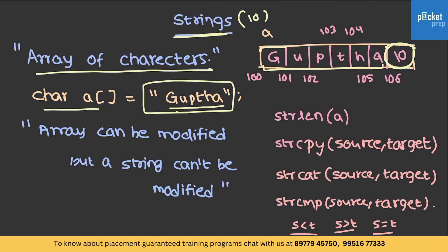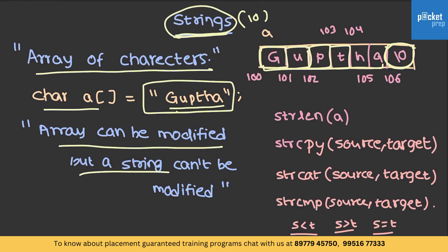As each character takes one byte, we store the characters in respective locations of the character array. One more thing to remember while dealing with strings: an array can be modified, but a string cannot be modified. If this is an array, you can change the value at a location by accessing A[0], A[1], A[2] and assigning a new value. But as it is a string, it cannot be modified.